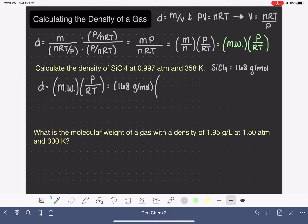We'll multiply this by the pressure that's given to us in the problem, 0.997 atmospheres. And the ideal gas constant, 0.08206.